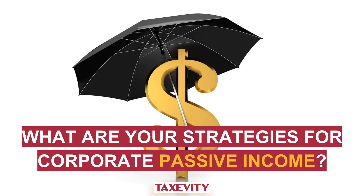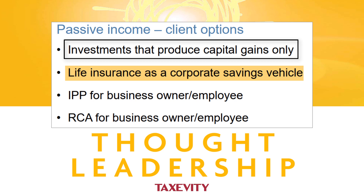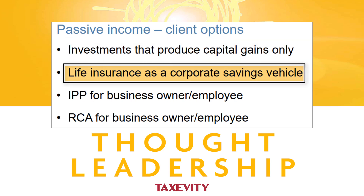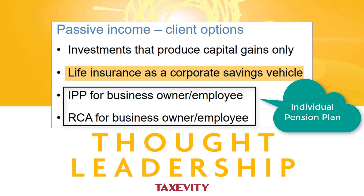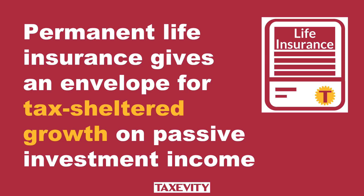What are your strategies for corporate passive income? Your clients can invest in options that only produce capital gains — which is to say they could invest in ways that are suboptimal. They could use life insurance for corporate savings. They could use IPPs and RCAs: an IPP is an individual pension plan, and an RCA is a retirement compensation arrangement. Both are ways to save for retirement and create taxable income later, with strict rules around these products. Permanent life insurance gives an envelope for tax-sheltered growth on passive investment income.